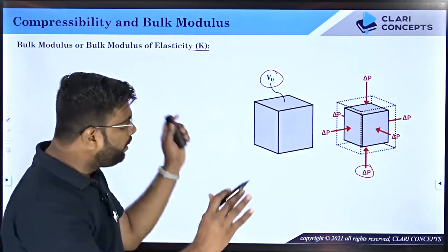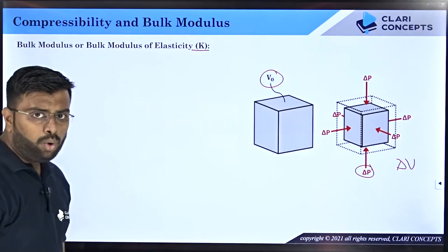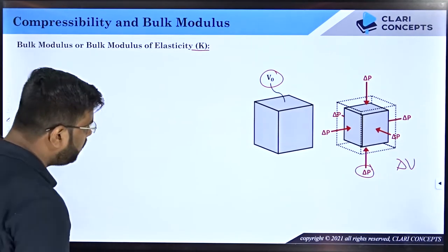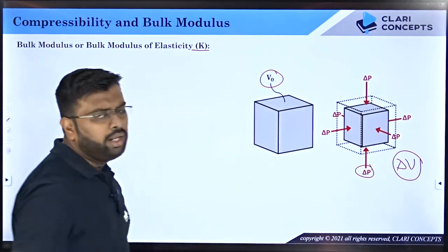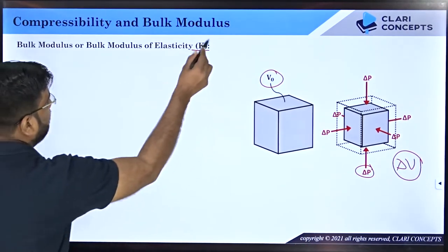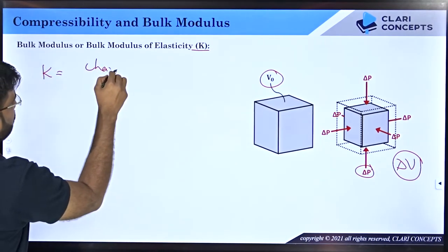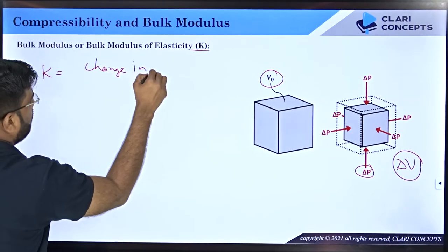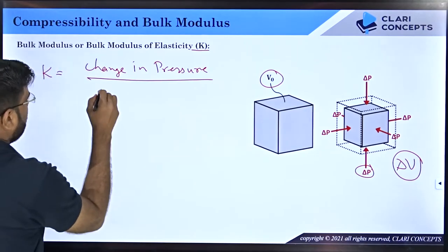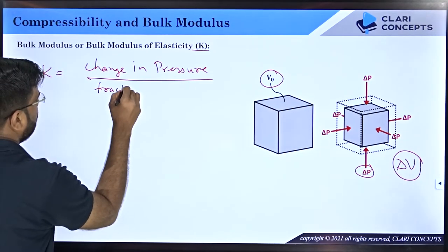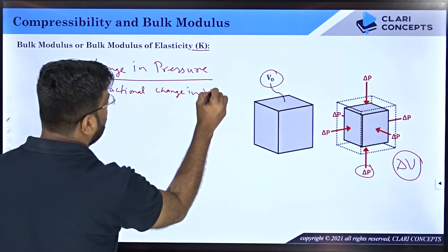Because of this pressure delta P, a volume reduction happens — let us say the volume is reduced by delta V. Now, if I find out for a unit fractional change in volume what extra pressure is required, that value is defined by the property K. So K is the ratio of change in pressure to the fractional change in volume of the fluid.